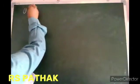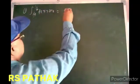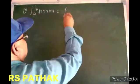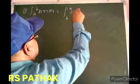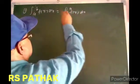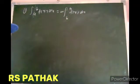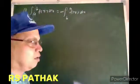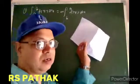First property is: from A to B, f(x) dx is equal to negative of from B to A, f(x) dx. If we are interchanging the upper limit and lower limit, the value of the integral will be negative.